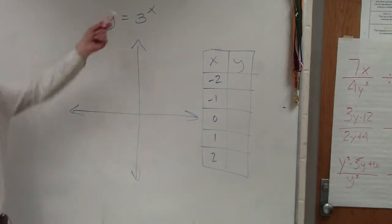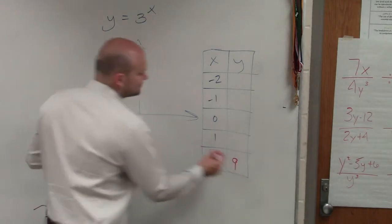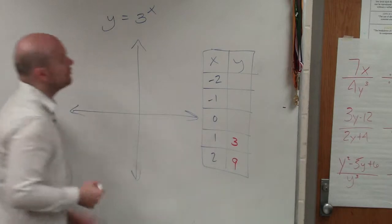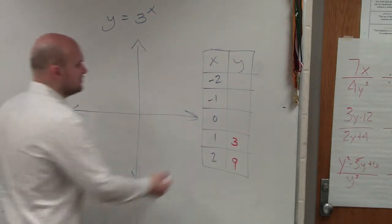So if I plug in 2 for x, 3 squared is just going to leave us with 9. 3 to the first power will leave us with 3. 3 to the 0 power is going to leave you with 1.